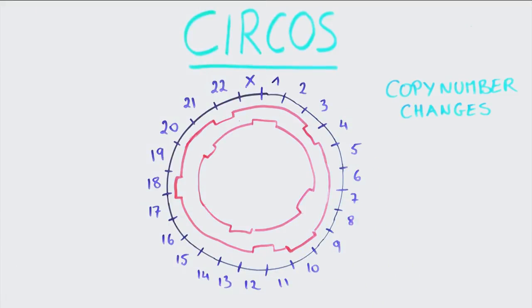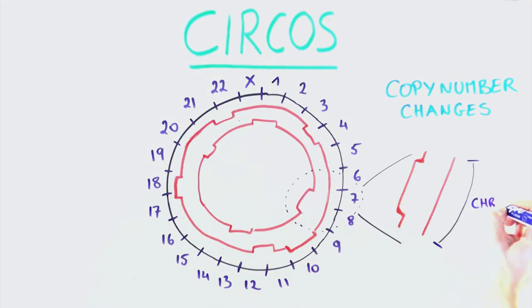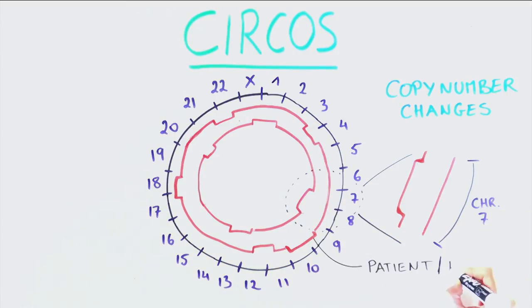From here, it's also easy to zoom in and look at a particular region in more detail. As you can see, it's easy to compare copy number changes between tumor samples.